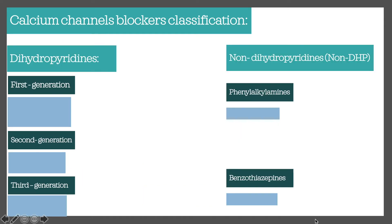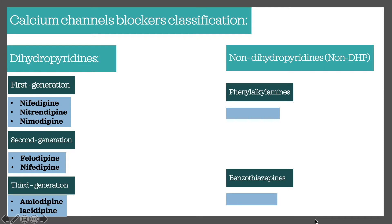The first generation DHPs include three drugs: nifedipine, nitrendipine, and nimodipine. Nifedipine reoccurs in the second generation as well, and felodipine is the main one to remember from second gen. From the third generation: amlodipine and lacidipine. The key ones to remember are nifedipine, nitrendipine, and nimodipine for first gen; felodipine for second gen; and amlodipine for third gen. Amlodipine is a commonly prescribed calcium channel blocker for angina pectoris and hypertension.